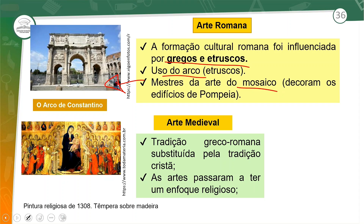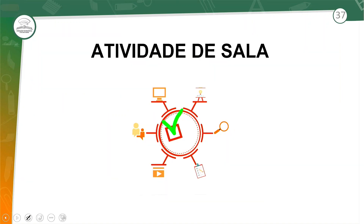Já no período medieval, temos culturas que tinham como foco principal a arte religiosa. Os temas eram sempre voltados para a religião cristã. Houve a substituição da tradição greco-romana pela tradição cristã.